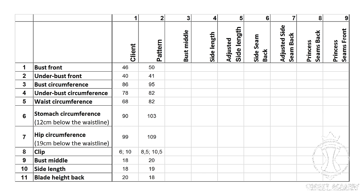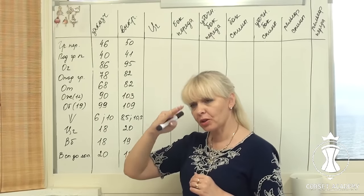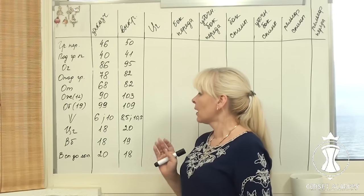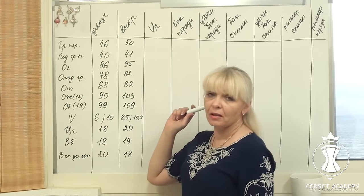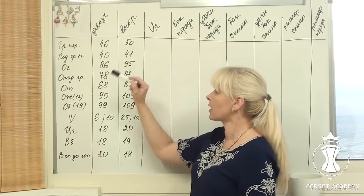Clip. I have taken two clip measurements for this dress: toward the neckline and toward the armseye. Bust middle is the distance between the supposed princess seams. Side length. Blade height back — this additional measurement indicates the maximum possible length of the back of the dress, so you can cover up as much as possible and avoid the problem where skin bulges over the top edge in the shoulder blade area.